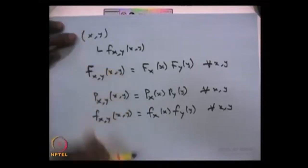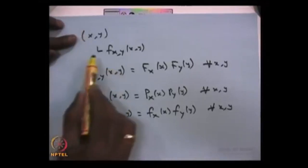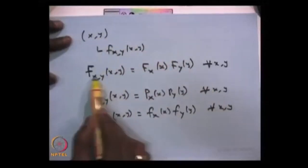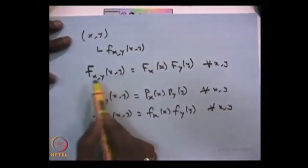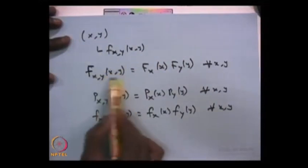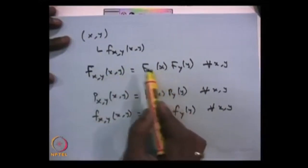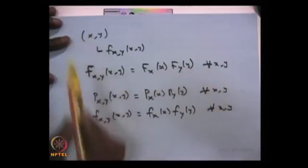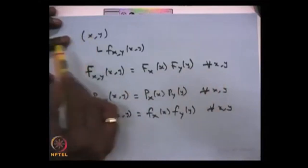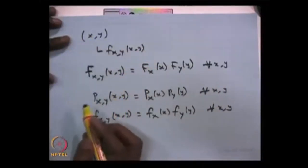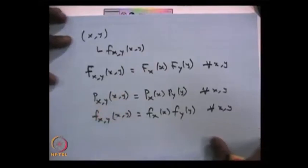This logic can be extended to any n random variables. Instead of two random variables, you can go for n random variables and find out the joint CDF. If the joint CDF of an n-dimensional random variable is the product of the individual CDFs, then you can conclude all n random variables are mutually independent.